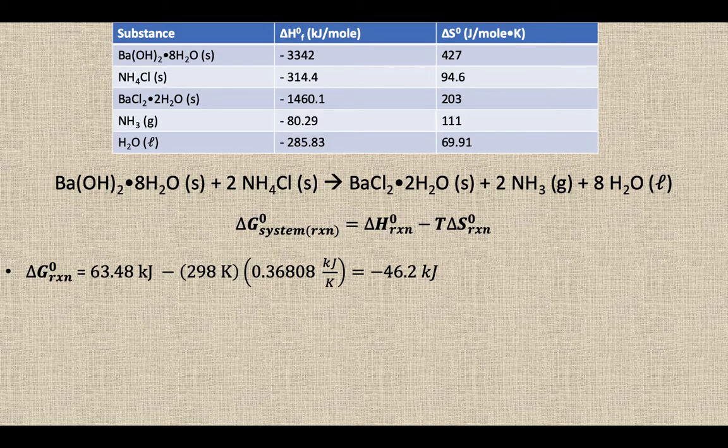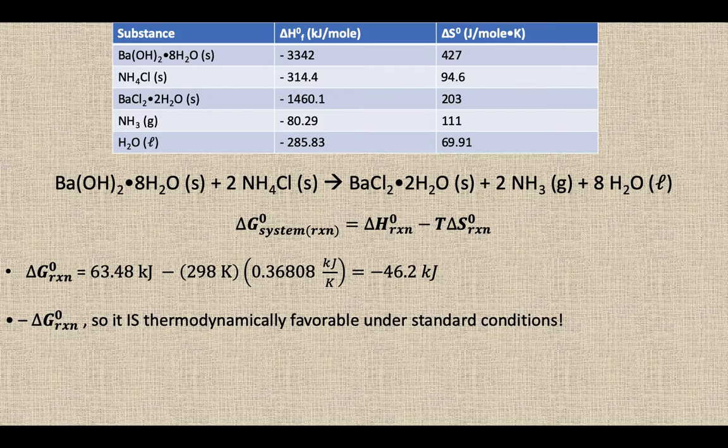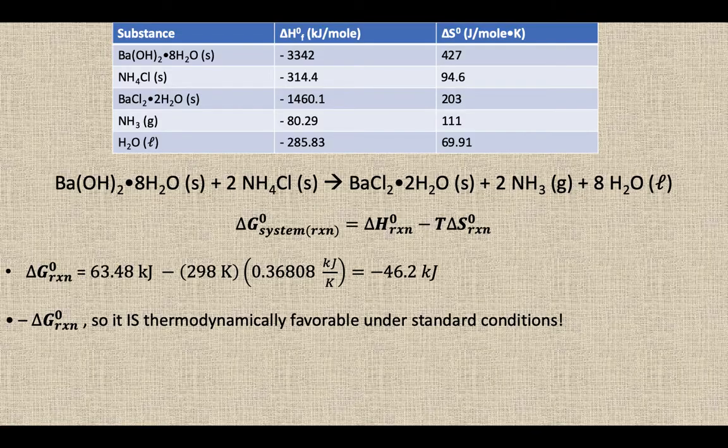And when we plug in that 298, you'd get a value of negative 46.2 kilojoules. That means it is thermodynamically favorable under standard conditions. So if I were to mix those two chemicals in a flask, they would make the products barium chloride, ammonia, and water all on their own without any outside intervention from me.